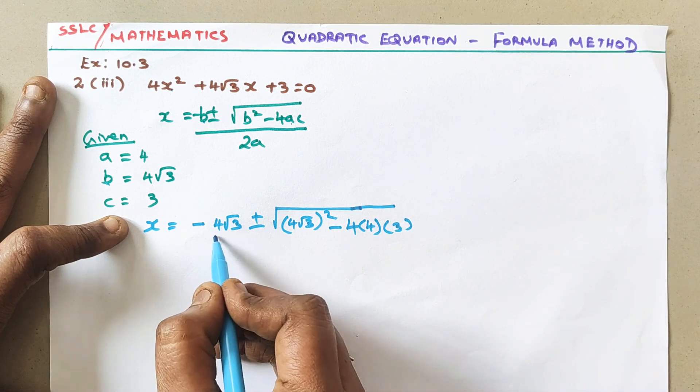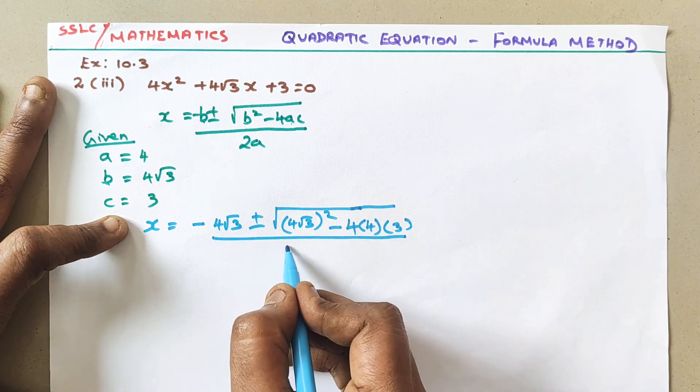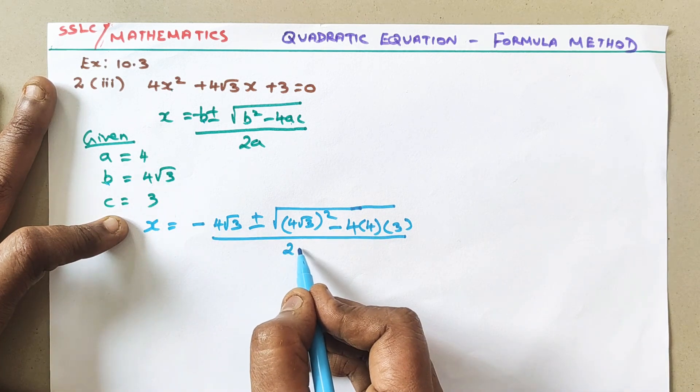The whole root divided by 2a. 2 times what is a value? a value is 4. So 2 × 4.